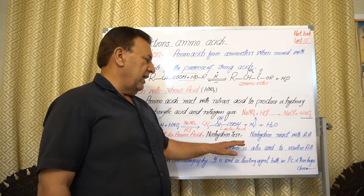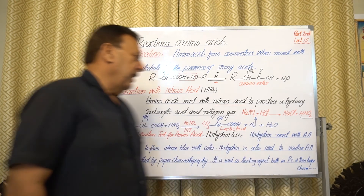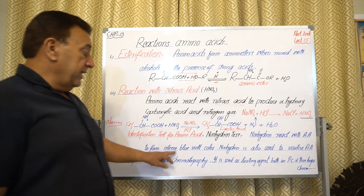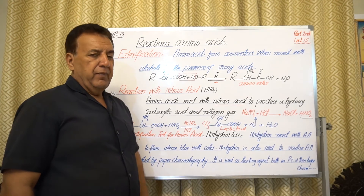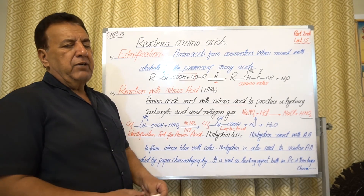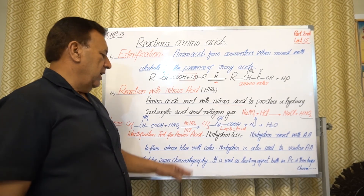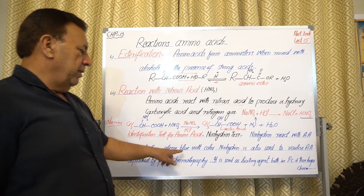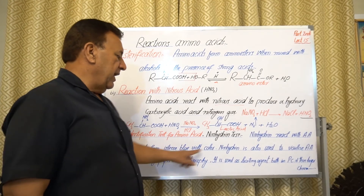The ninhydrin test is used for identification of amino acids. Ninhydrin reacts with amino acids to form an intense blue-violet color. So if an amino acid is present in a solution, it will give a blue-violet color.